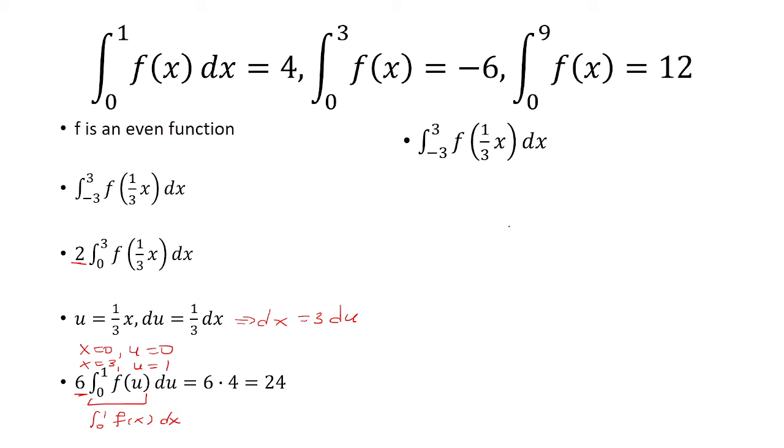Alternatively, we could have just done a u substitution from the beginning. And when x is negative 3, u would have been negative 1. And when x was 3, u would be 1. And then you still get dx is 3 times du, so we just put the 3 outside.